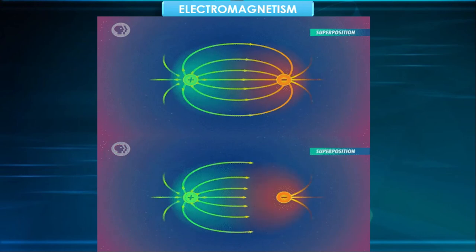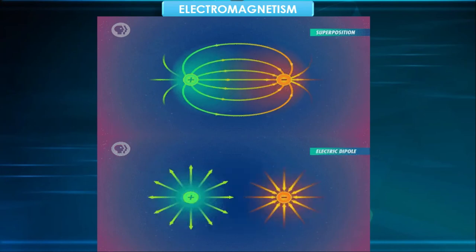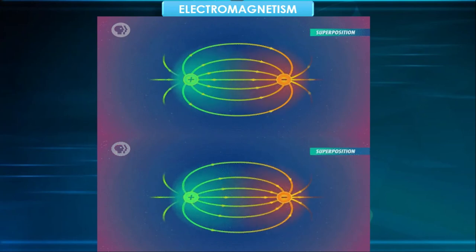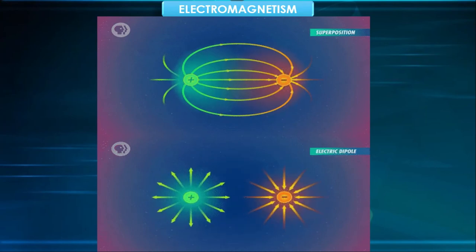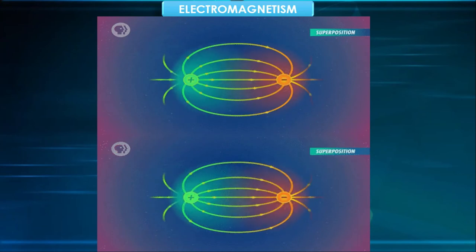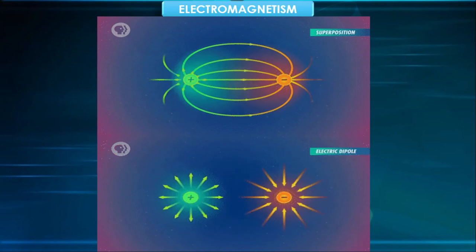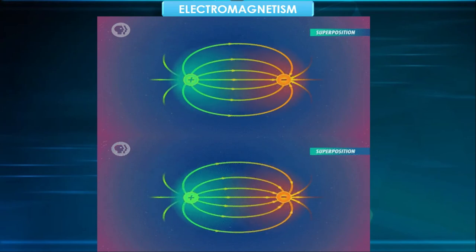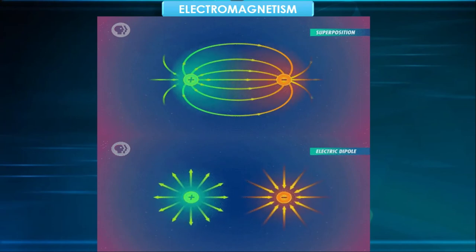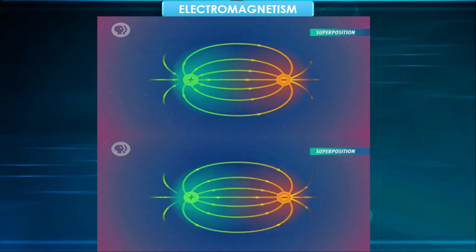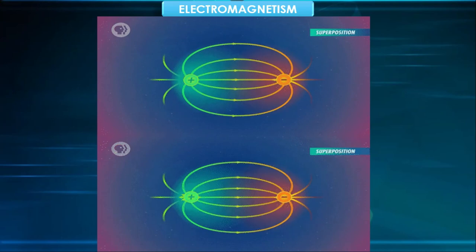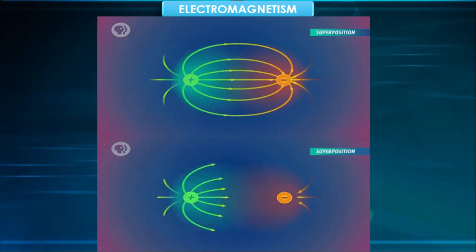Coming to the important topic of electromagnetism — an electric charge has an electric field, and if it moves it will generate a magnetic field. The combination of electric and magnetic fields together is called the electromagnetic field, and the interaction with charges is the source of electromagnetic force. Electromagnetism is a branch of physics involving the study of electromagnetic force — a type of physical interaction that occurs between electrically charged particles. The electromagnetic force is responsible for electromagnetic radiation such as light. Electromagnetic phenomena is sometimes called the Lorentz force, which includes both electricity and magnetism as different manifestations of the same phenomenon.